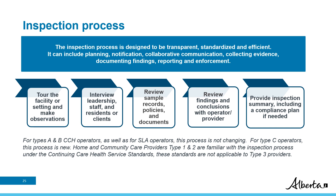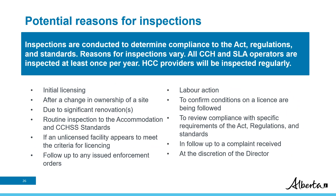At this time, home and community care and Type C continuing care home inspections are not publicly reported. Should this process change, operators and providers will be informed in advance. Inspections are conducted to determine compliance to the Act, regulations, and standards, including the Accommodation Standards for Continuing Care Homes and Supportive Living Accommodations and the Continuing Care Health Service Standards. Alberta Health may complete an inspection for various reasons, including initial licensing, if an unlicensed facility appears to meet the criteria for licensing, or to confirm conditions on a license are being followed, or in follow-up to a complaint received.